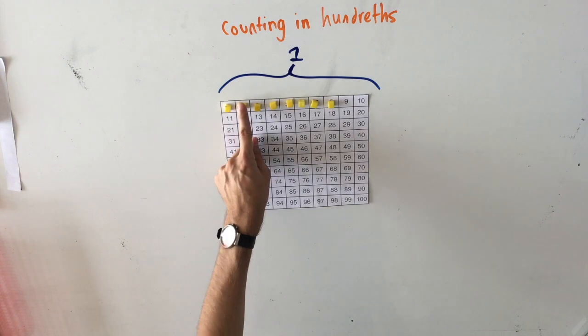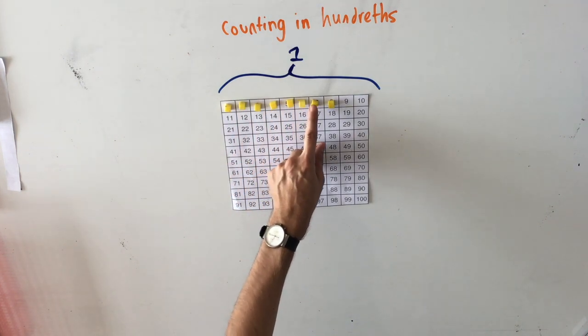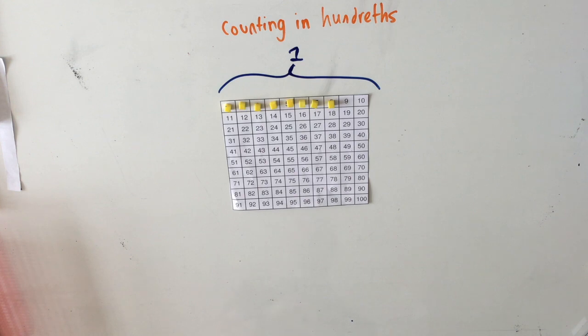One, two, three, four, five, six, seven, eight. I've covered up eight one hundredths with my deans.